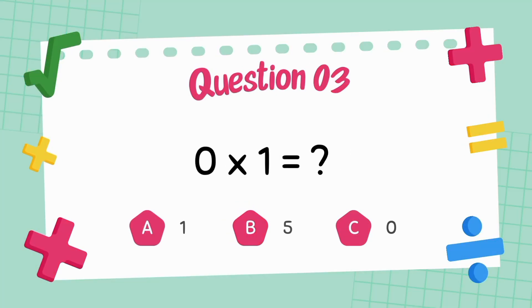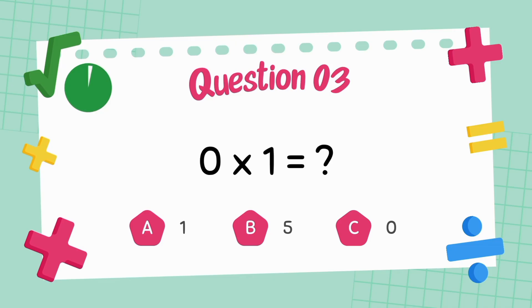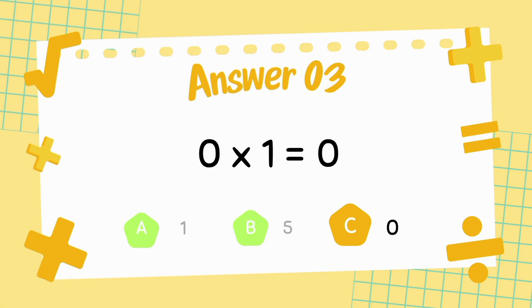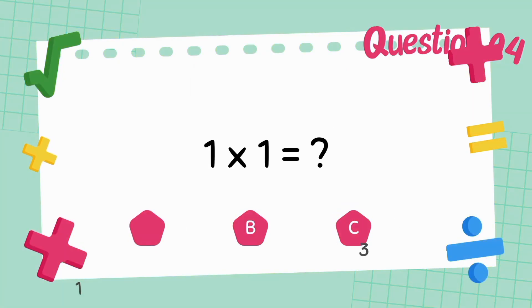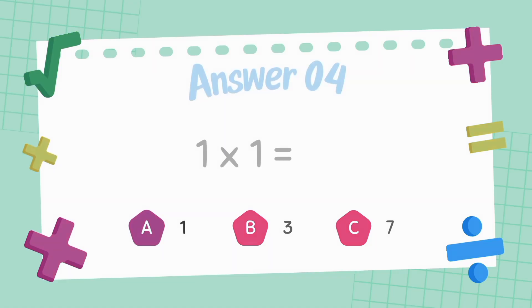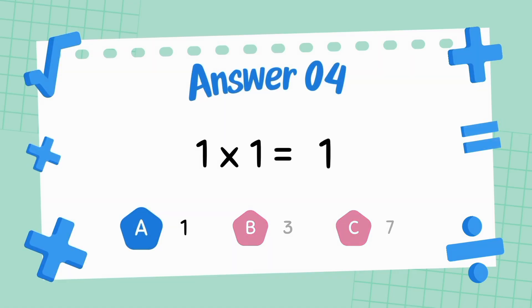What is zero multiply one? The answer is zero. What is one multiply one? The answer is one.